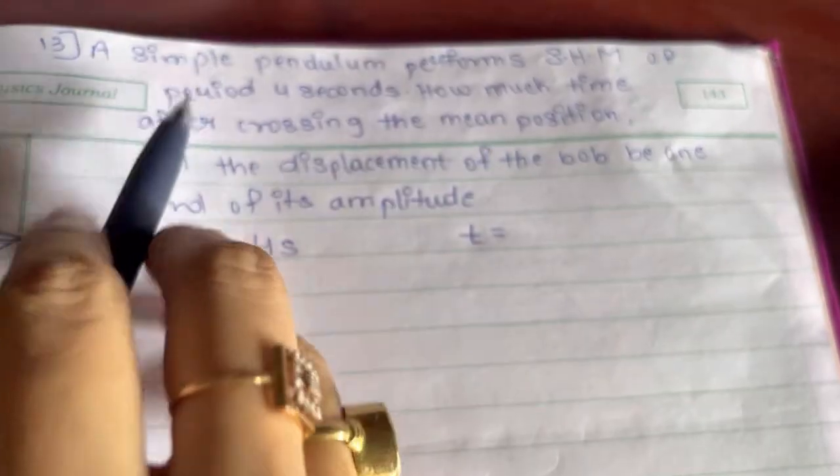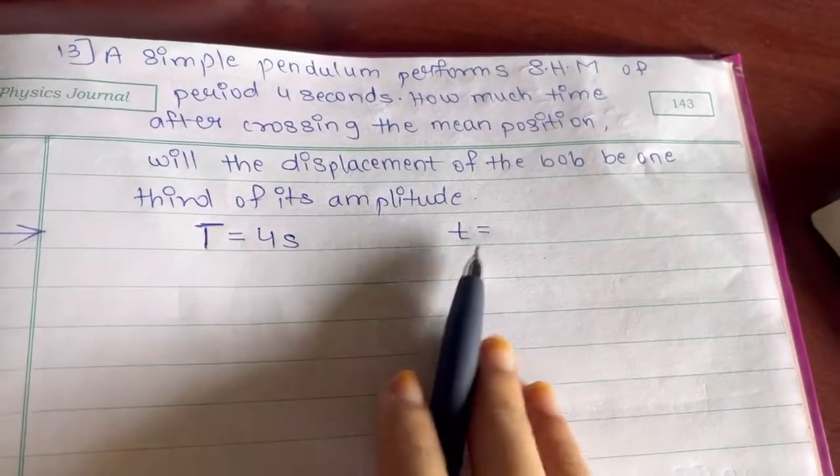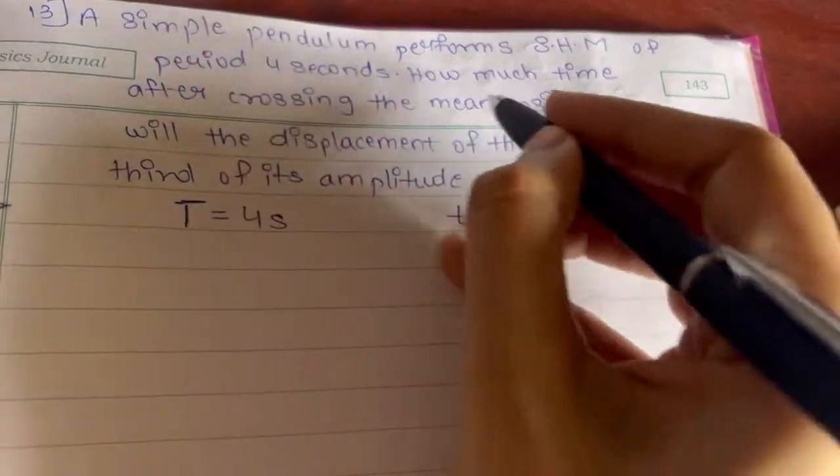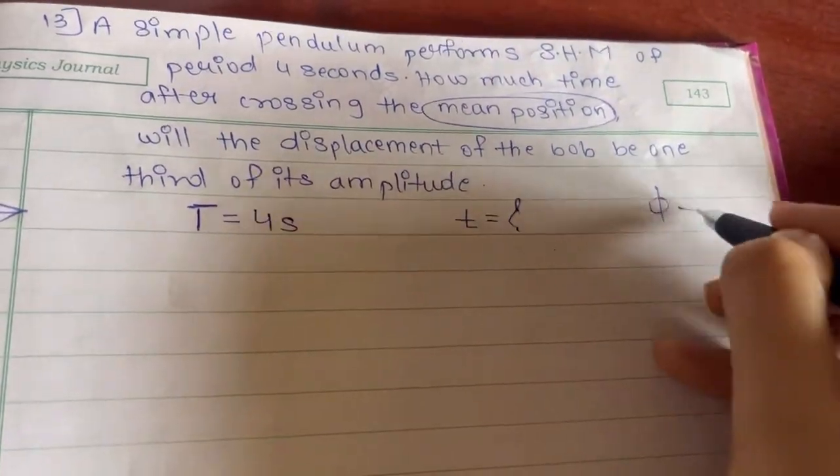If they are telling time period then it will be capital T. If you are telling time then it is small t. After crossing the mean position means phi is equal to 0.